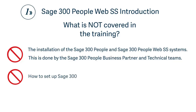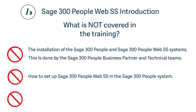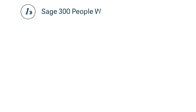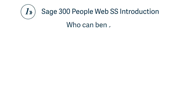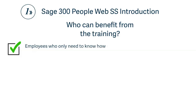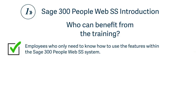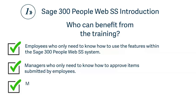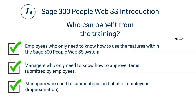Also not covered: how to set up Web SS in the Sage 300 People system, and how the Sage 300 People system is influenced by submitted items in Web SS. Who can benefit from this training? Employees who only need to know how to use the features within the system, managers who only need to know how to approve items submitted by employees, and managers who need to submit items on behalf of employees.